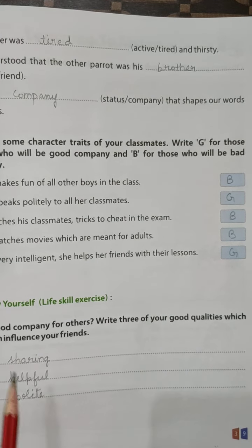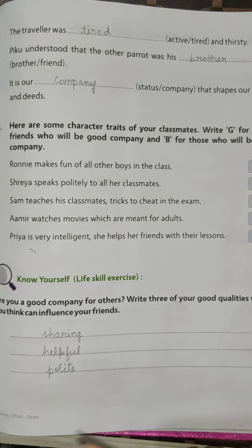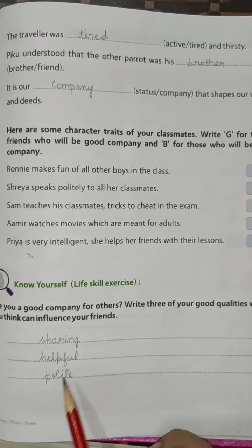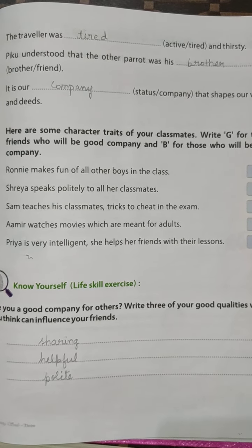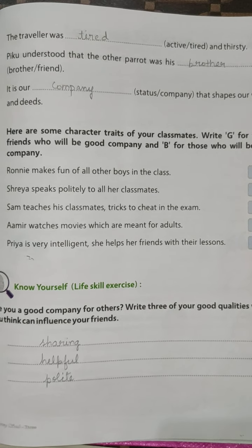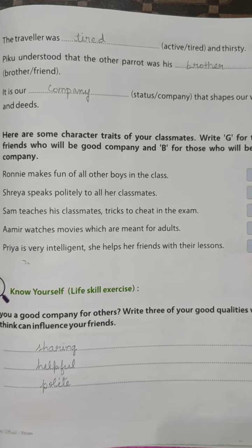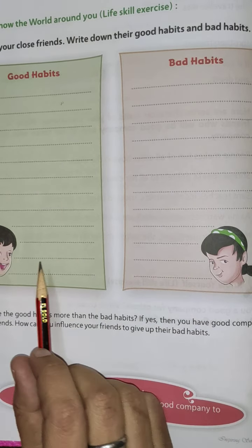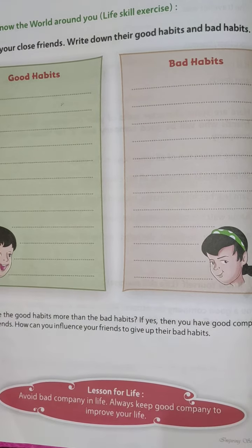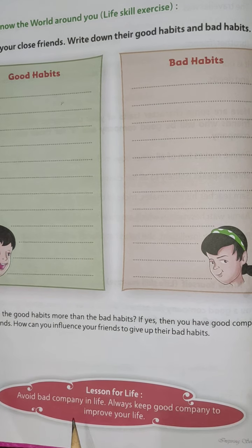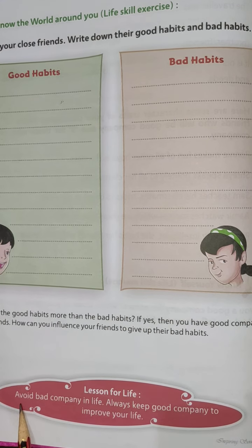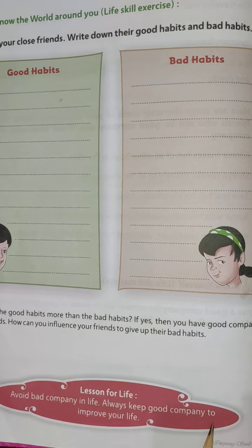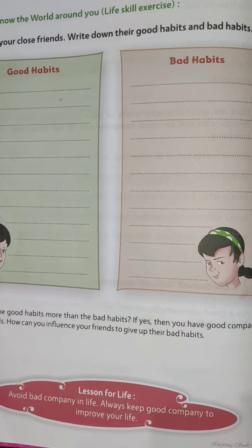Now, for good habits and bad habits: sharing, helping, being helpful, and politeness are good habits. You can also write your own examples of bad habits. The lesson of this story is: avoid bad company in life. Always keep good company to improve your life. Thank you.